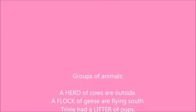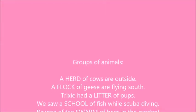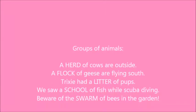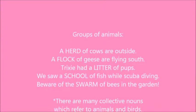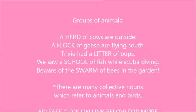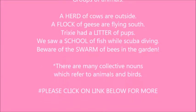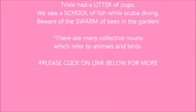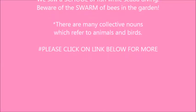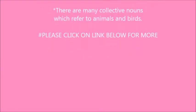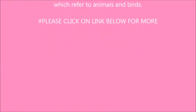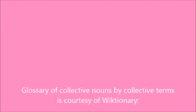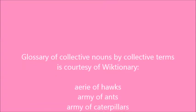Let's have a look at animals collectively — collective nouns for animals. A herd of cows are outside. A flock of geese are flying south. Trixie had a litter of pups. We saw a school of fish while scuba diving. Beware of the swarm of bees in the garden. There are many collective nouns which refer to animals and birds — please check out the website below, as this gives you loads of them.